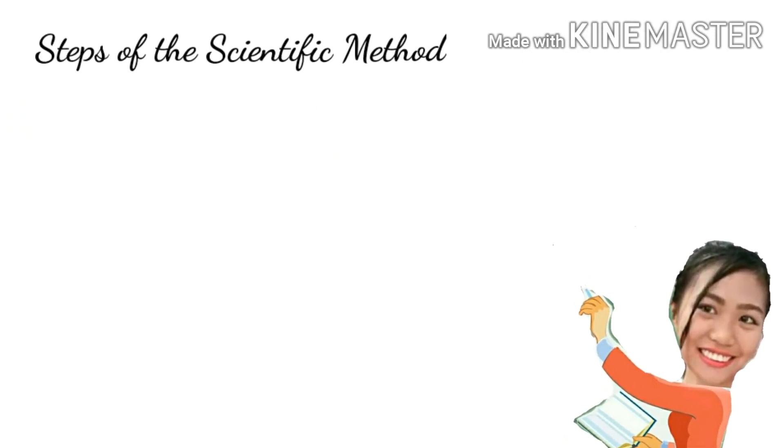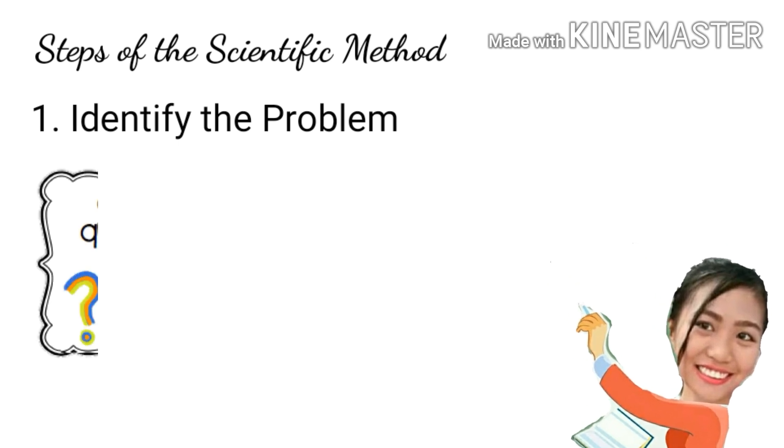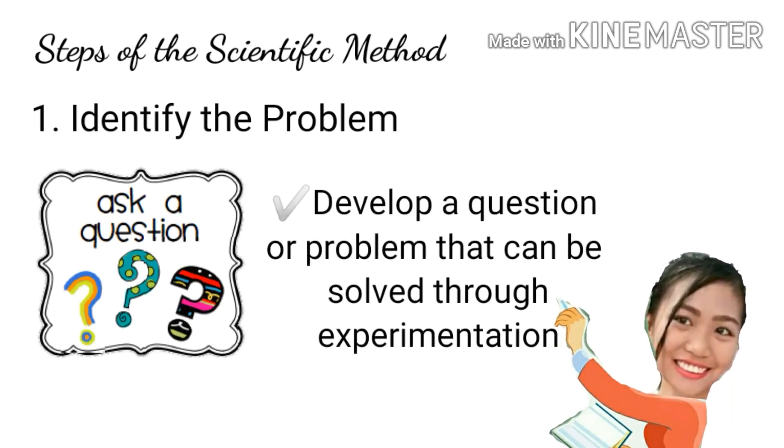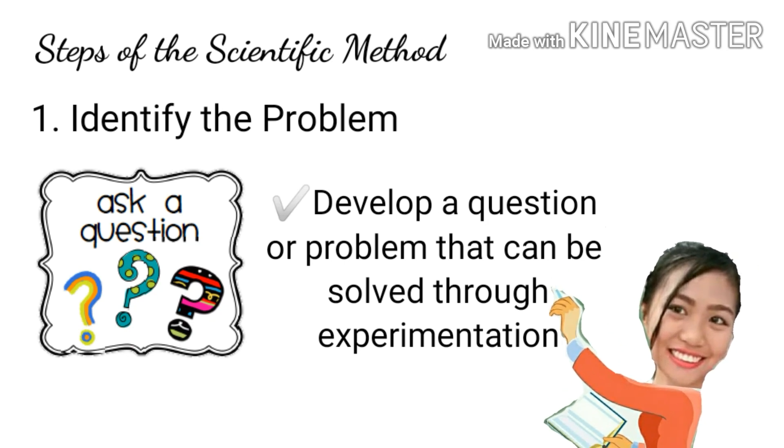Steps of the scientific method. Number one is identify the problem. Develop a question or problem that can be solved through experimentation.